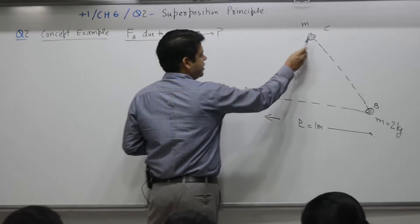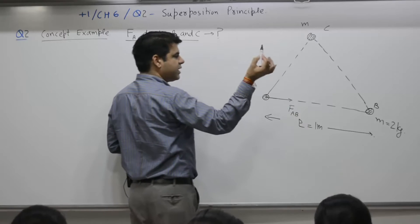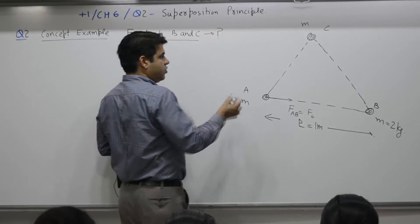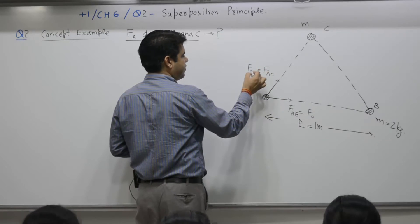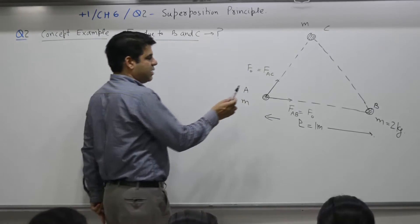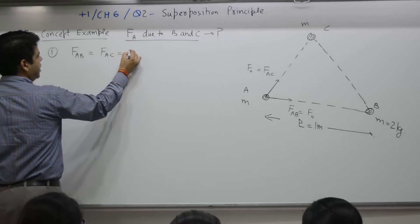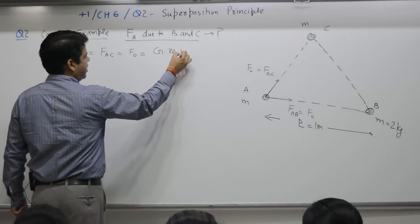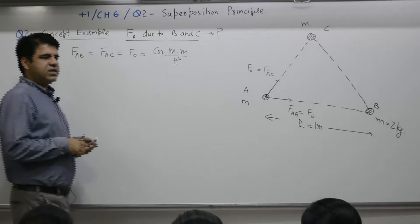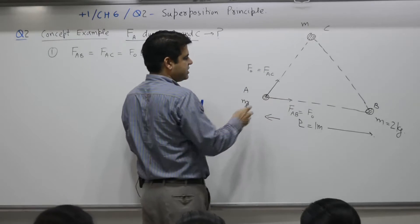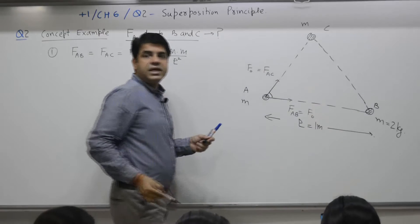The force on A due to C acts along one direction, and the force on A due to B acts along another direction — both of some magnitude F₀. Why the same magnitude? Because the formula is capital G M₁M₂ / R², and R is L in both cases, so the magnitude is F₀ for both. The two force vectors are inclined at 60 degrees because it is an equilateral triangle — all sides are the same length.